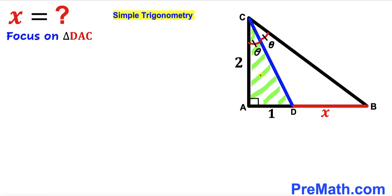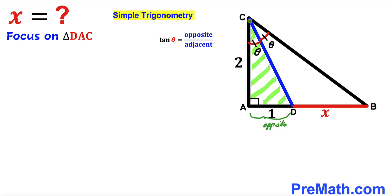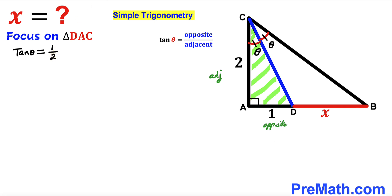Now let's focus on this right triangle DAC. Recalling the trigonometric ratio tangent of theta equals opposite divided by adjacent — for triangle DAC, side AD is our opposite and AC is our adjacent. So our tangent of theta turns out to be 1 divided by 2, since 1 is opposite and 2 is adjacent.